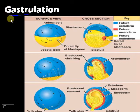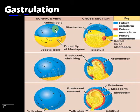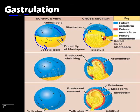Gastrula — from the word gastro meaning stomach — is the stage where we form the gut. This is also the stage where you form the three main germ layers: ectoderm, mesoderm, and endoderm. Looking at a surface view, the cells in the animal pole rapidly divide such that they envelop the entire vegetal pole, pushing it inside. This is what we call an invagination.